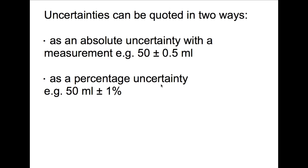There are two ways to quote uncertainties. The first way is as an absolute uncertainty with a measurement. For example, we've measured out 50 millilitres of a liquid and we have an absolute uncertainty of plus or minus 0.5 mils. That means our actual measurement is anywhere between 49.5 and 50.5 millilitres. We can turn this into a percentage uncertainty, which will be useful later when we combine uncertainties. An uncertainty of 0.5 ml for a 50 ml measurement is 1%.